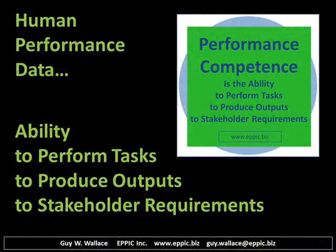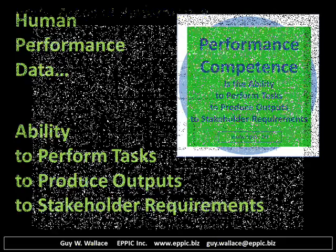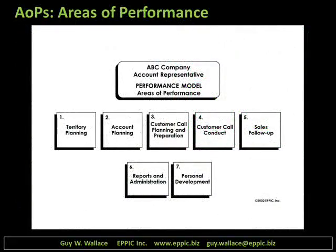Performance competence, in my view, is the ability to perform tasks to produce outputs to stakeholder requirements. Those stakeholder requirements are about the process tasks themselves and the products or outputs of the processes and the tasks. An example of areas of performance — one way to begin to analyze the needs of a job — is reflected in this performance model and its areas of performance for the account representative from the ABC company. This is adapted from work that I did back in the 1980s.